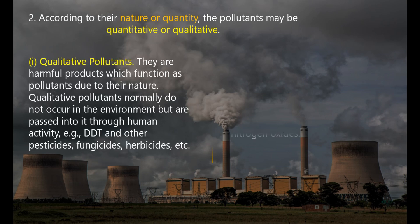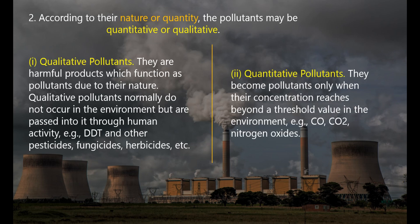First, qualitative pollutants: they are harmful products which function as pollutants due to their nature. Quality is related to nature — something that is harmful even in a low amount. For example, DDT is harmful due to its quality.